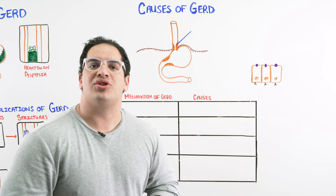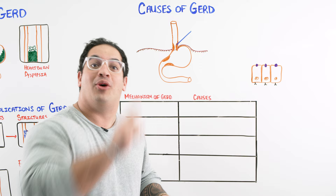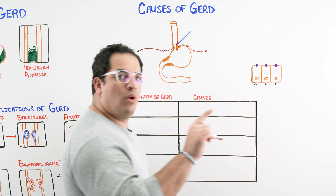The first reason is the lower esophageal sphincter (LES). This area is supposed to be nice and tight to prevent hydrochloric acid from going up into the esophagus. If the tone is really low, that's one particular mechanism — a low lower esophageal sphincter tone.